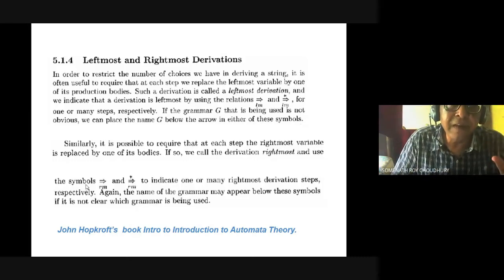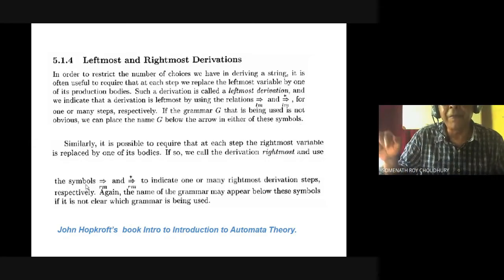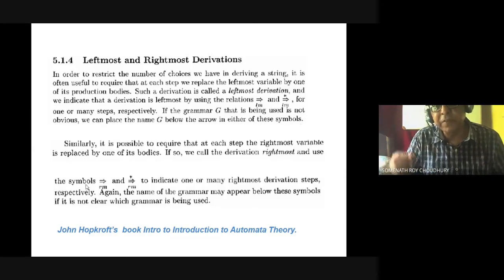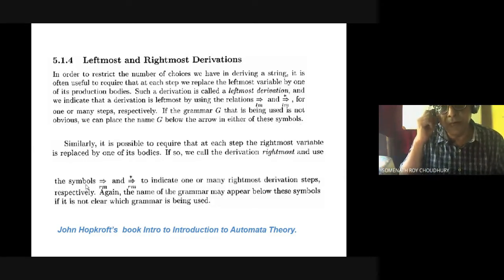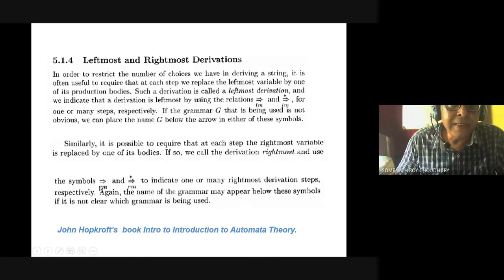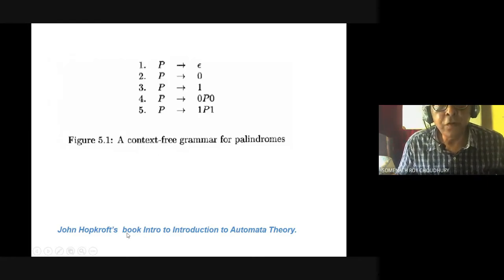About derivation: say left-side variable is S, right-side is terminal 'a', capital A, capital B. If we go for the next stage of derivation, derive capital A first — that is leftmost derivation. If I go for B first, that is rightmost derivation. You can see, if we apply a number of rules, you say rightmost start. The same applies to leftmost derivation.